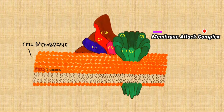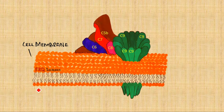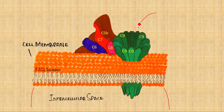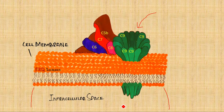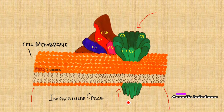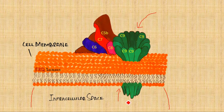This channel is formed with the help of all the complements starting from C5b and ending at C9. This whole complex is known as MAC — the Membrane Attack Complex — because it will finally break or rupture the whole bacterial cell. Water starts moving from the outside to the inner portion of the cell, creating an osmotic imbalance. The bacteria cannot tolerate that much fluid within its body and eventually it will rupture — this process is known as lysis.